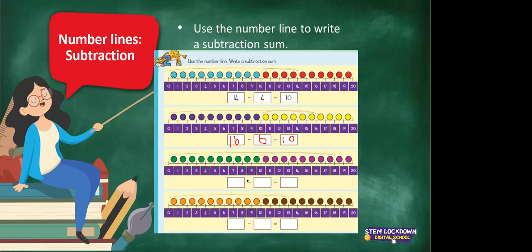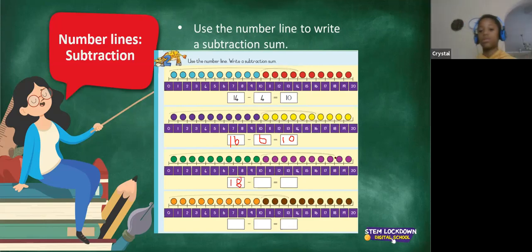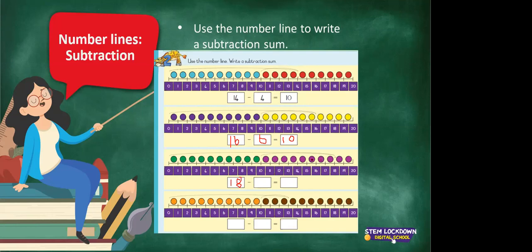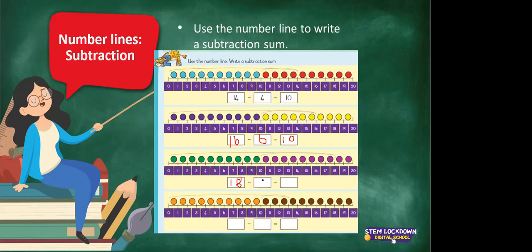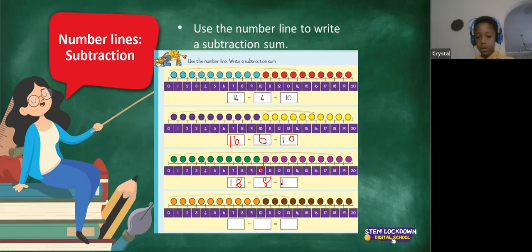Now we don't have a sum here — no problem. We go to the 18, the last number. We say 18, we start with 18, the bigger number. Then we are going to minus. Let's count: 1, 2, 3, 4, 5, 6, 7, 8. Well done — it is 8. And on which number did it land? On 10.